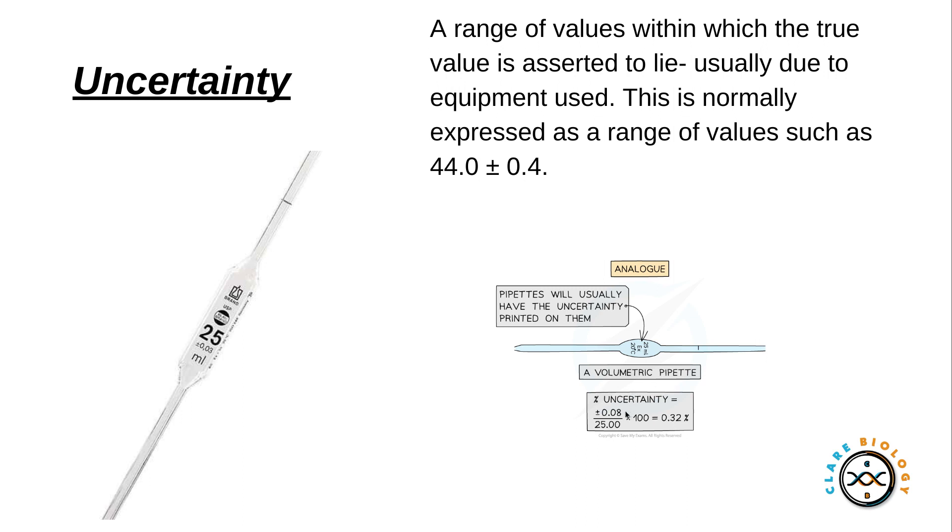Whereby on this pipette my variety I could get is 0.08 milliliters. I divide that by 25, which is the volume I'm measuring in this pipette, times 100, which equals 0.32 uncertainty. Now if you're using this pipette twice you'd have to times this by two, so be wary of that for your exams.